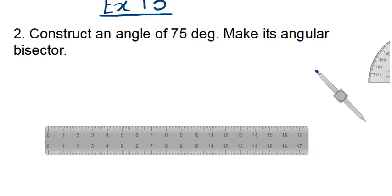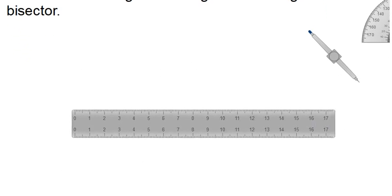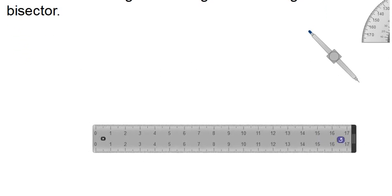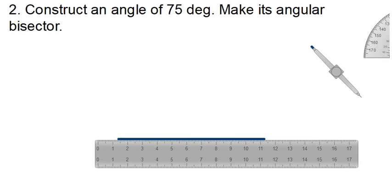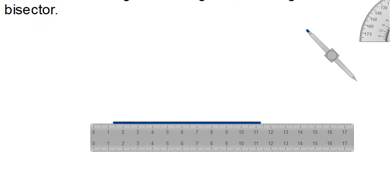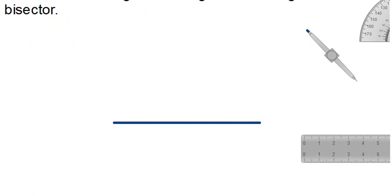With the help of our ruler, the first thing we always do is draw a line of any length — it's totally up to you. Once your line is drawn you can name it as well. Let's name the endpoints B and C.